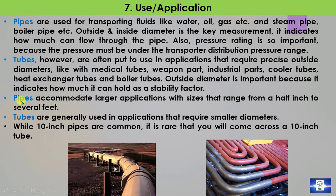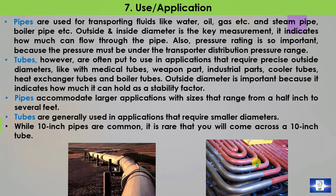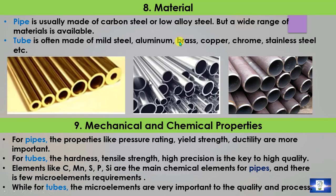For pipes, sizes range from half an inch to several feet accommodating larger applications. Tubes are generally used in applications requiring smaller diameters. Point 8: Material. Pipe is usually made of carbon steel or low alloy steel, though a wide range of materials is available. Tubes are often made of mild steel, aluminum, brass, copper, chrome, stainless steel, etc.